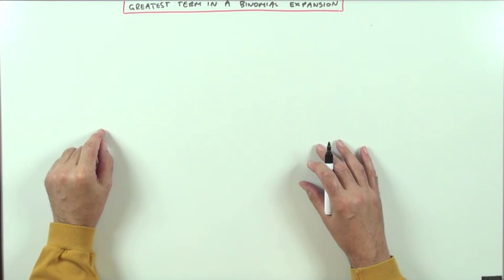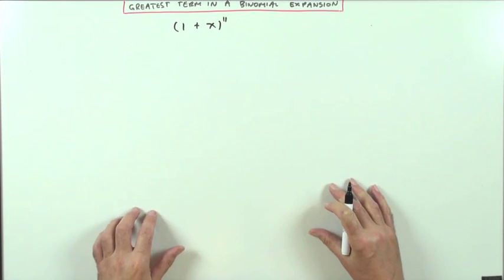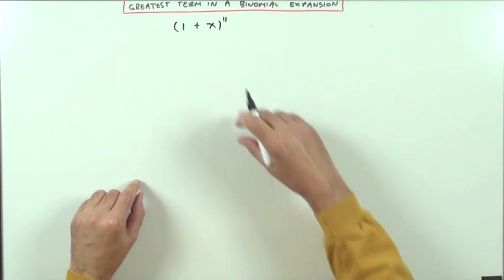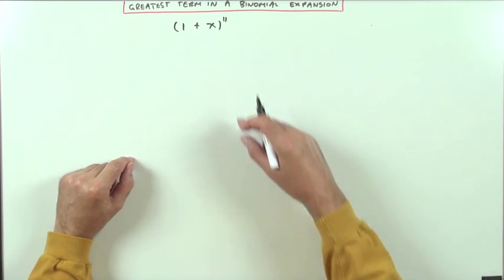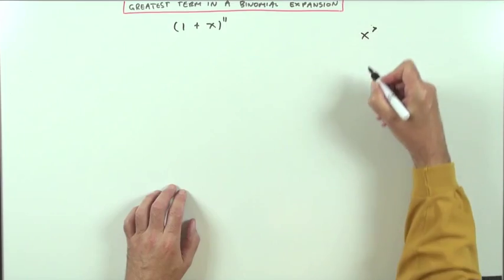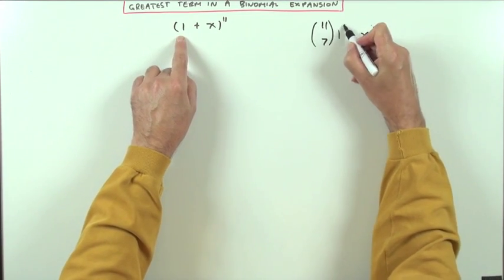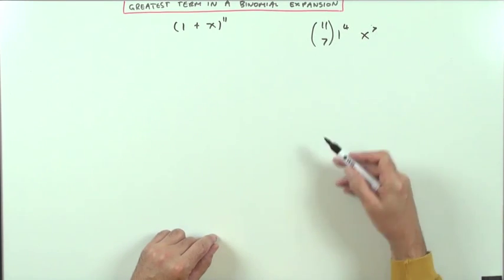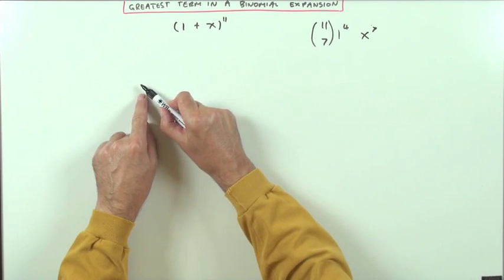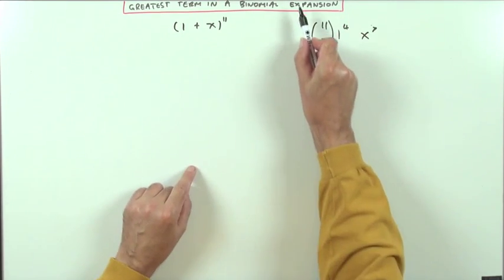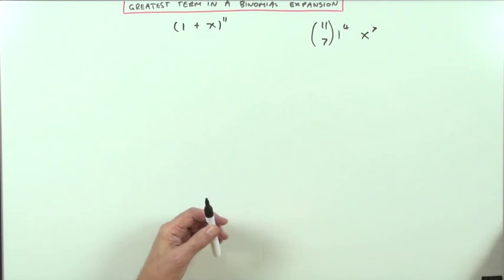Finding the greatest term in the binomial expansion, rather than just identifying a particular term and getting its coefficient - that part's easy enough. If I wanted to know what's the coefficient of the term in x to the 7, that'd be easy enough. The term in x to the 7 would simply be C(11,7), 1 to the power 4, x to the 7, going through the binomial coefficients, the second one rising from power 0 up to power 11, and the first one dropping from power 11 down to power 0. It's easy enough to identify a particular term.